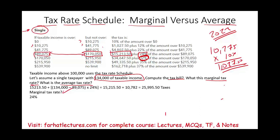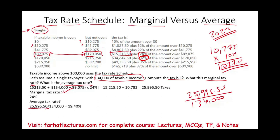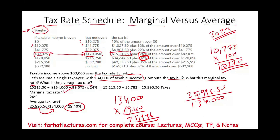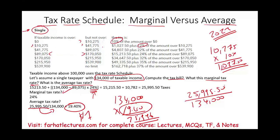What do we mean by your average tax rate? You paid a total of $25,995.50 on income of $134,000. If we divide $25,995.50 by $134,000, your average tax rate is approximately 19.4%. So on average, each dollar you make, you pay approximately a little under 20% to the U.S. government — although your highest rate is 24%, for earlier amounts you paid 10% and 12%, which brought the average down to about 19.4%.